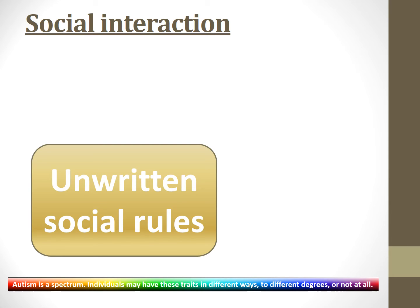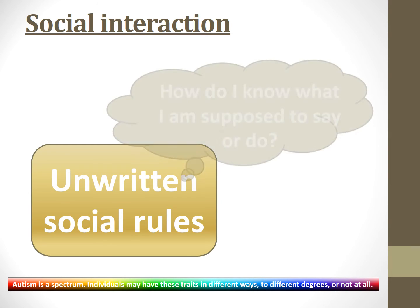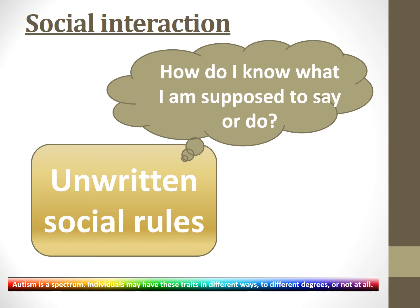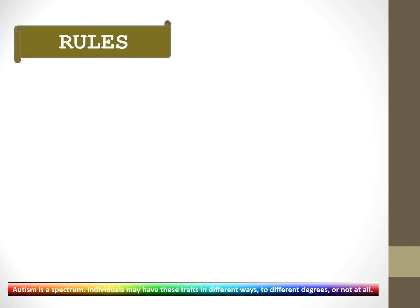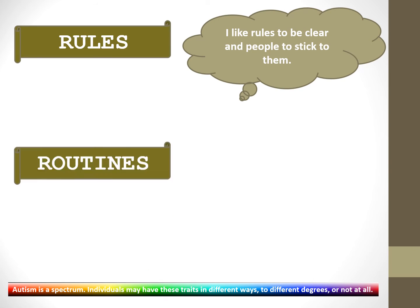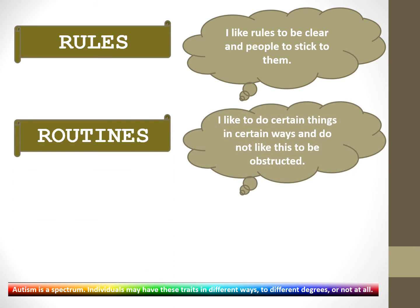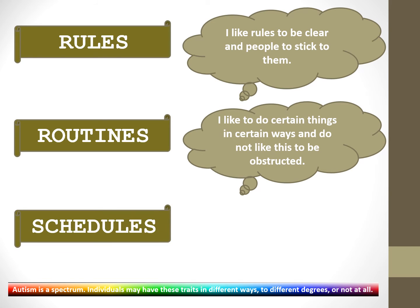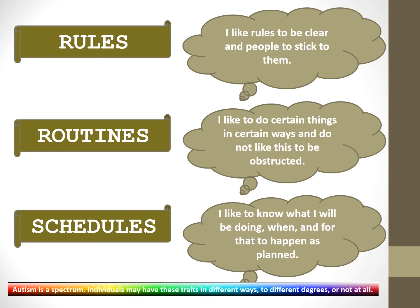Many environments — whether the workplace or circles of friends — have unwritten social rules. But if they're unwritten, how are we supposed to know what they are? How is an autistic person supposed to know what they're supposed to say or do? Autistic people tend to like structural predictability: rules to be clear and people to stick to them, routines done in certain ways without obstruction, and schedules — knowing what they'll be doing and when.